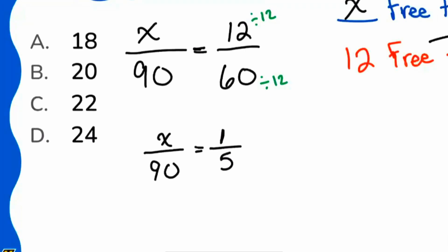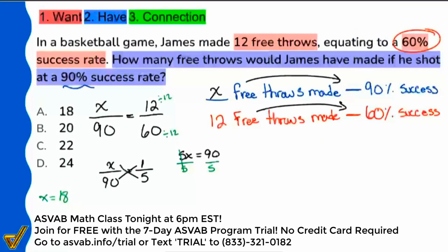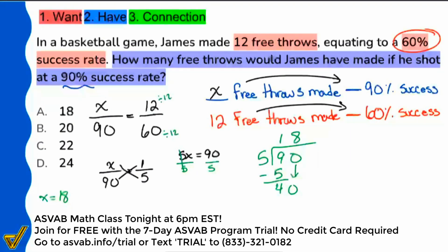We cross multiply and get 5X equals 90. The last thing we need to do is divide both sides by five, and we're done. X equals 18. If you didn't know how to get that automatically, you can use long division: five goes into nine one time, and five goes into 40 eight times — that's where the 18 comes from. So 18 free throws made corresponds with a 90% success rate. Booyah — that's answer choice A and we are done.